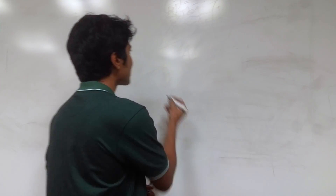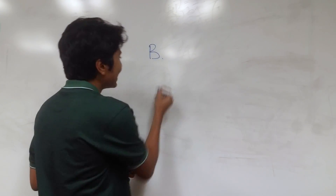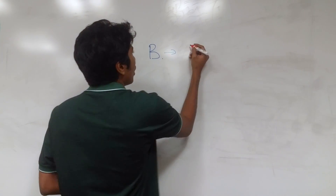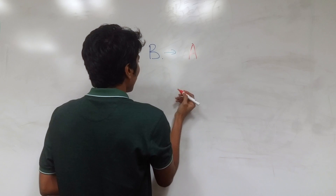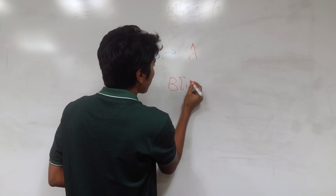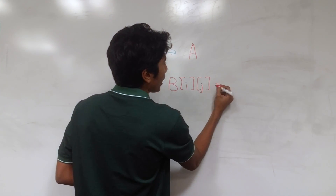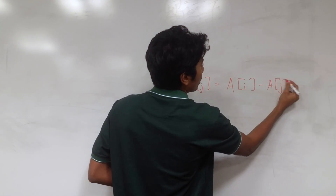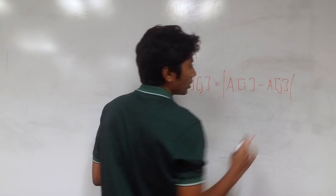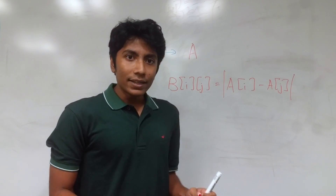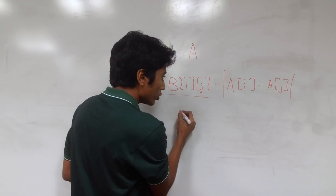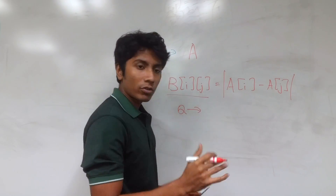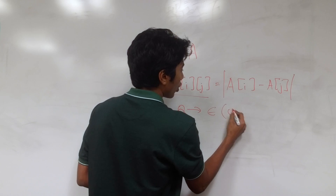You have a matrix B constructed using an array A. The values of B are given by B[i][j] = |A[i] - A[j]|, the absolute difference. There are guarantees that for the Q values of B given to you, B[i][j] must be either 0 or 1.